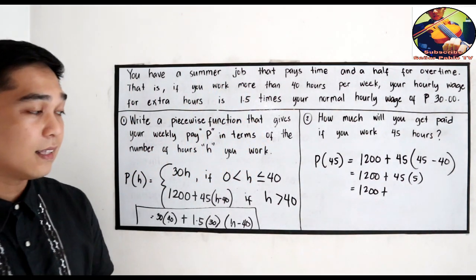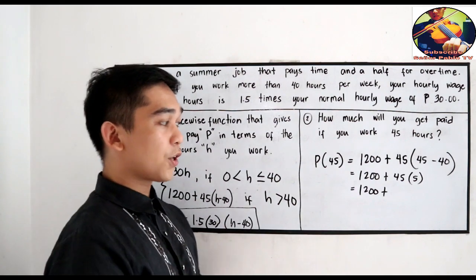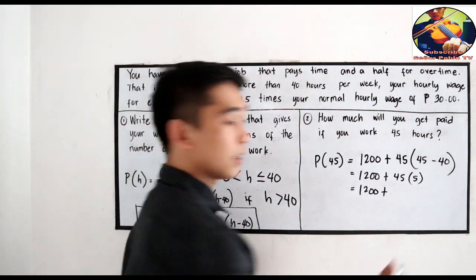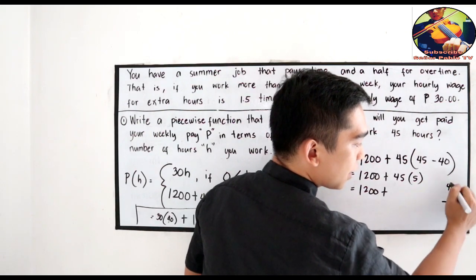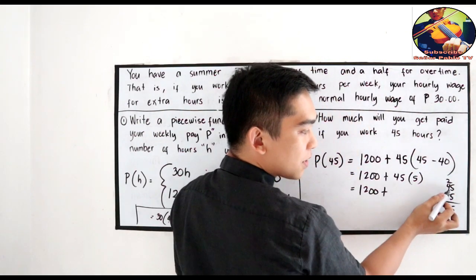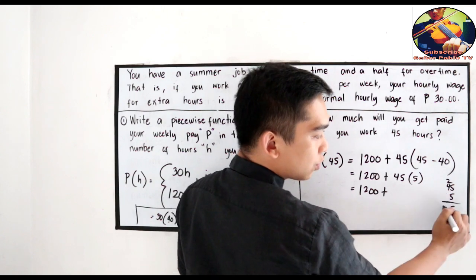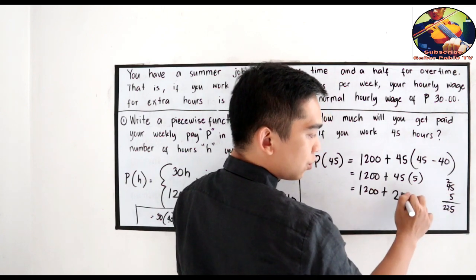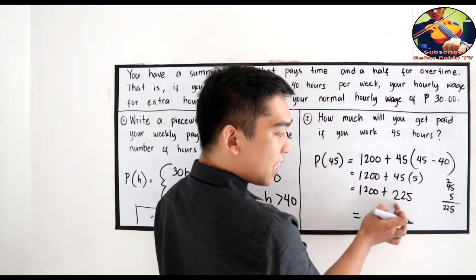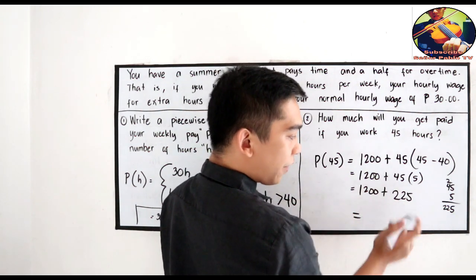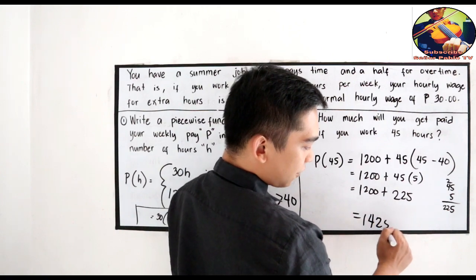Add them. So 45 times 5: 5 times 5 is 25, carry 2. 4 times 5 is 20 plus 2, 22. So 225. Now add: 1,200 plus 225. That is 1,425.